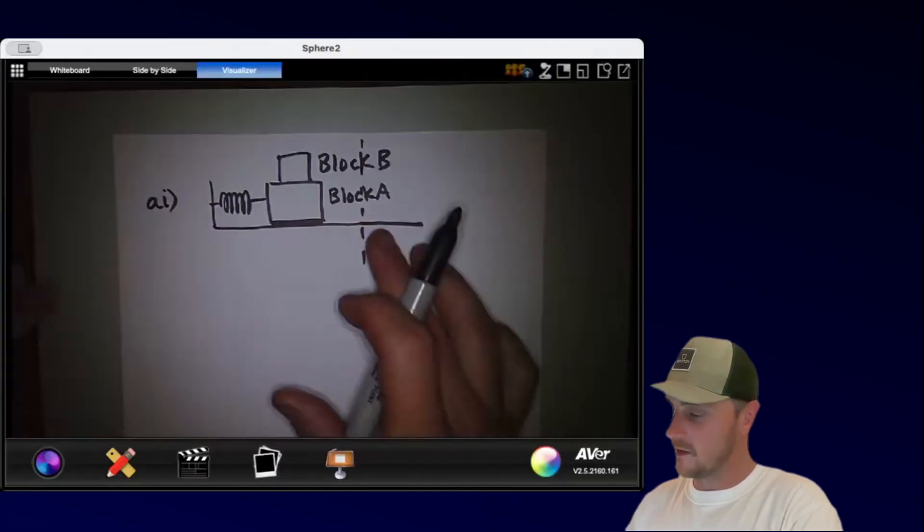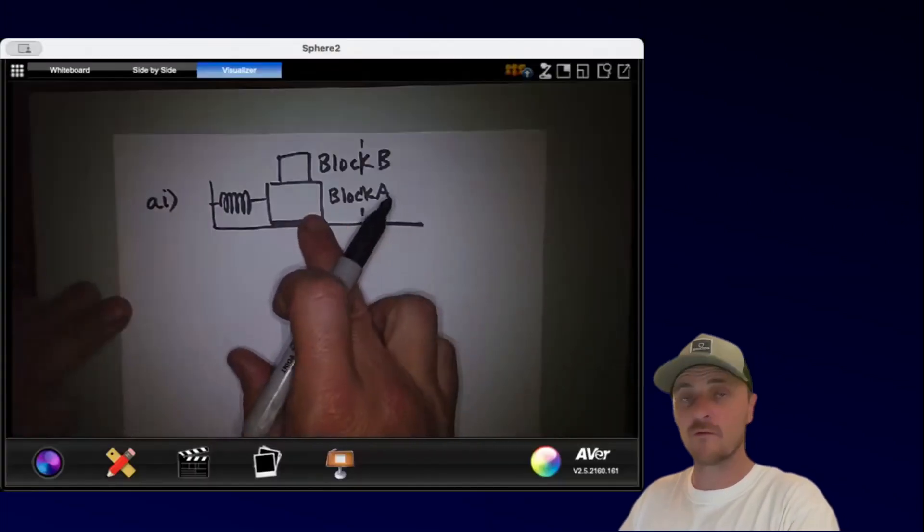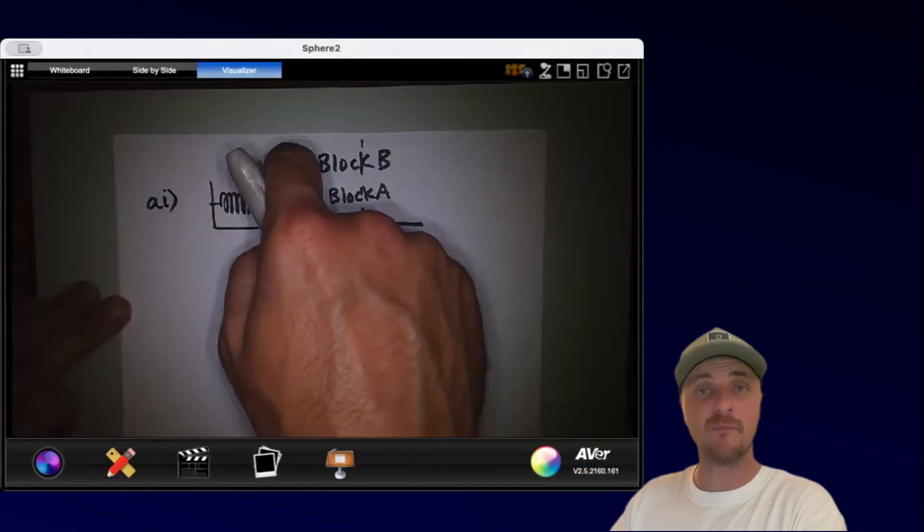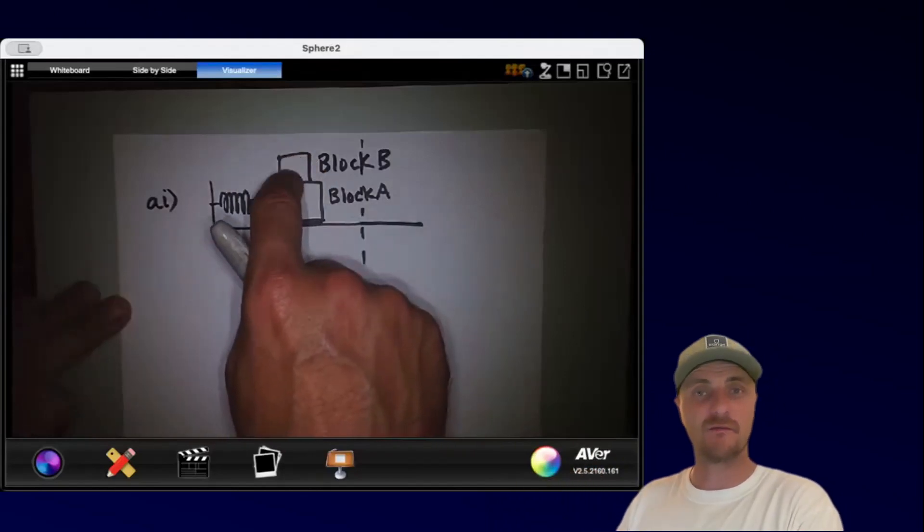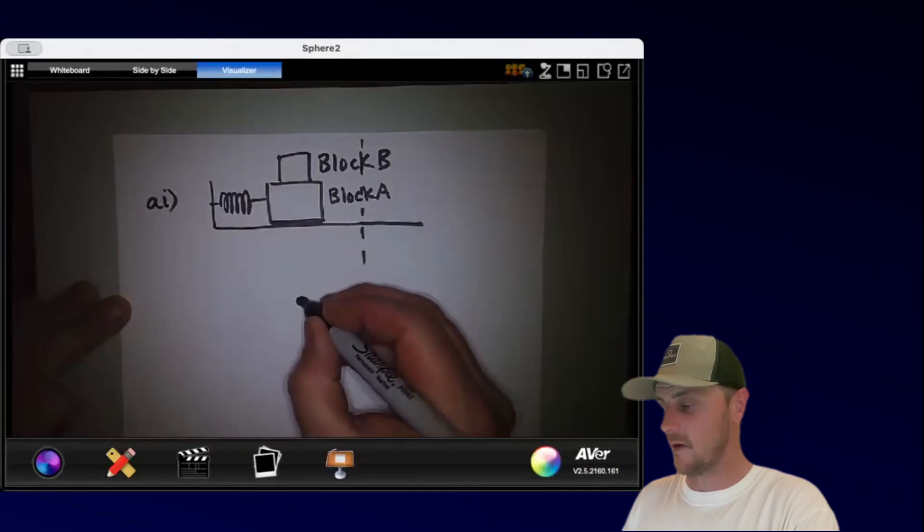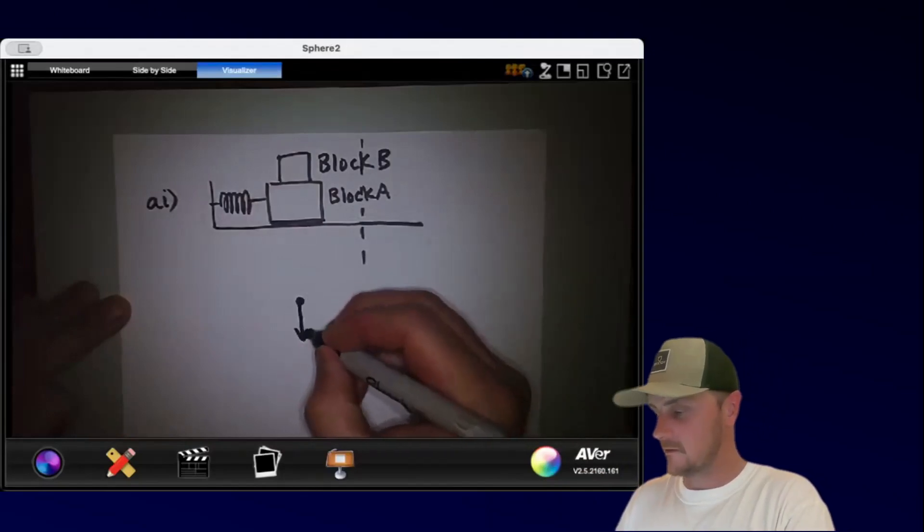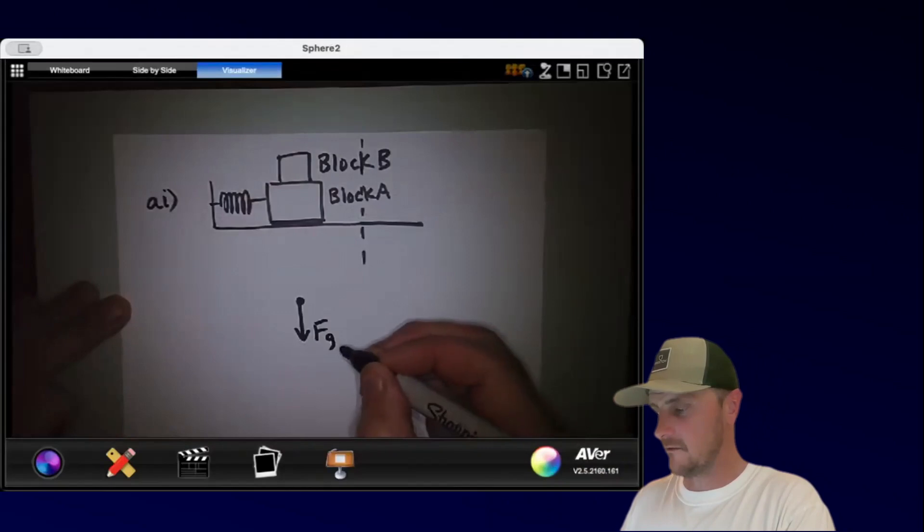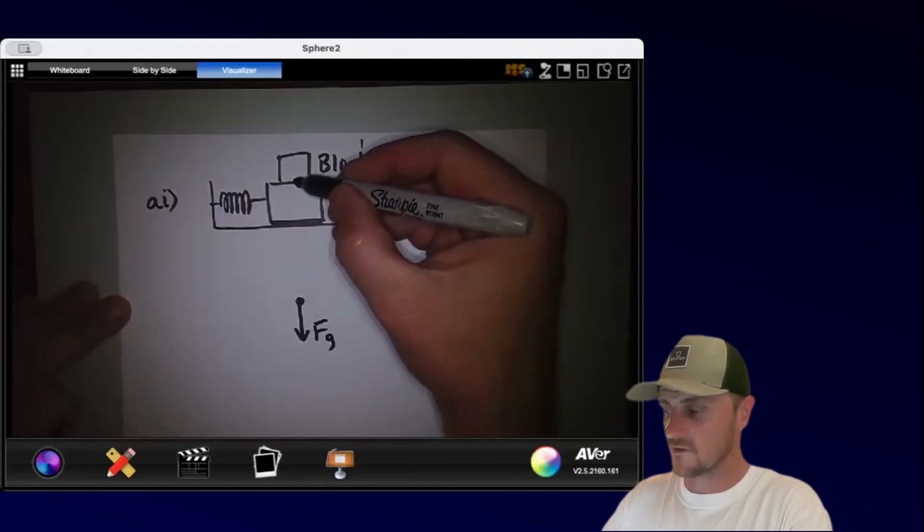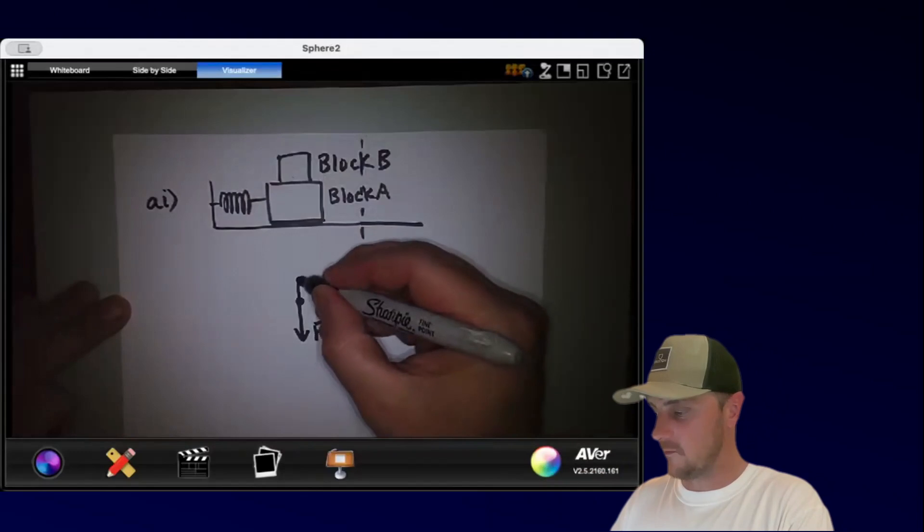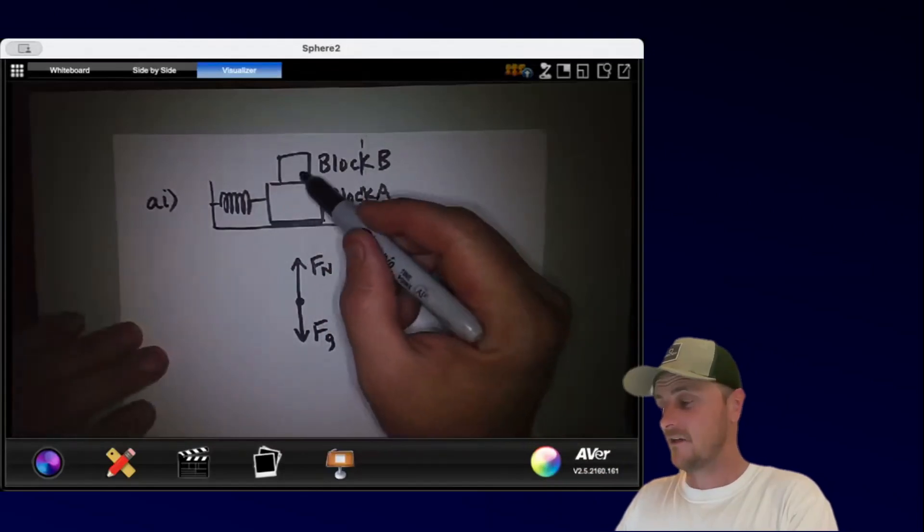So here's our system, and we're going to compress it like this, and then we're going to release it from rest. They're asking what forces are acting on block B when we release this system from rest. So here's our dot that represents block B, and it's a block, so it's definitely got gravity. There's a force of gravity acting down. There must be a force from the surface of block A pushing up on block B, and that would be the normal force from block A.